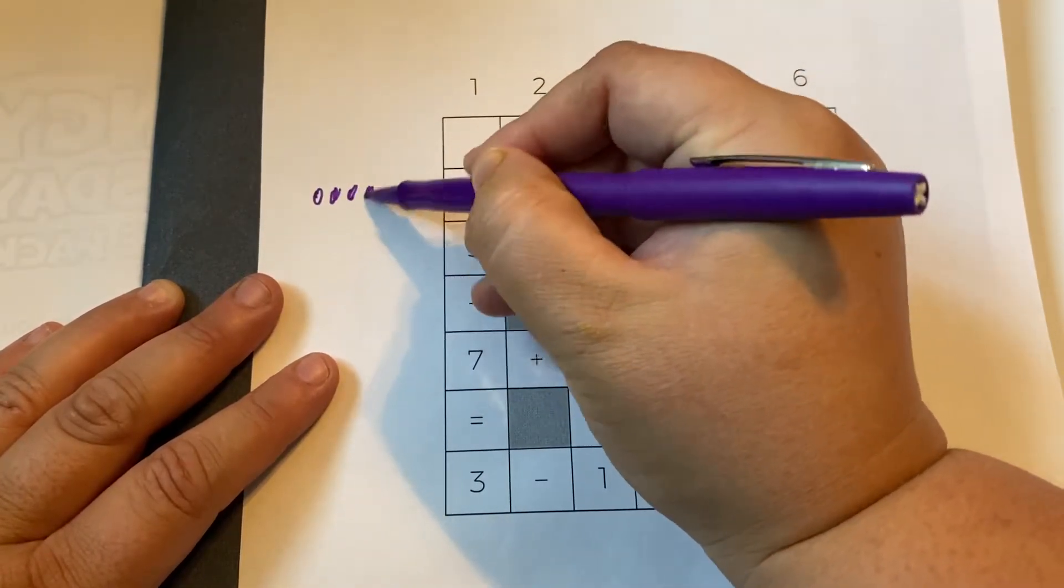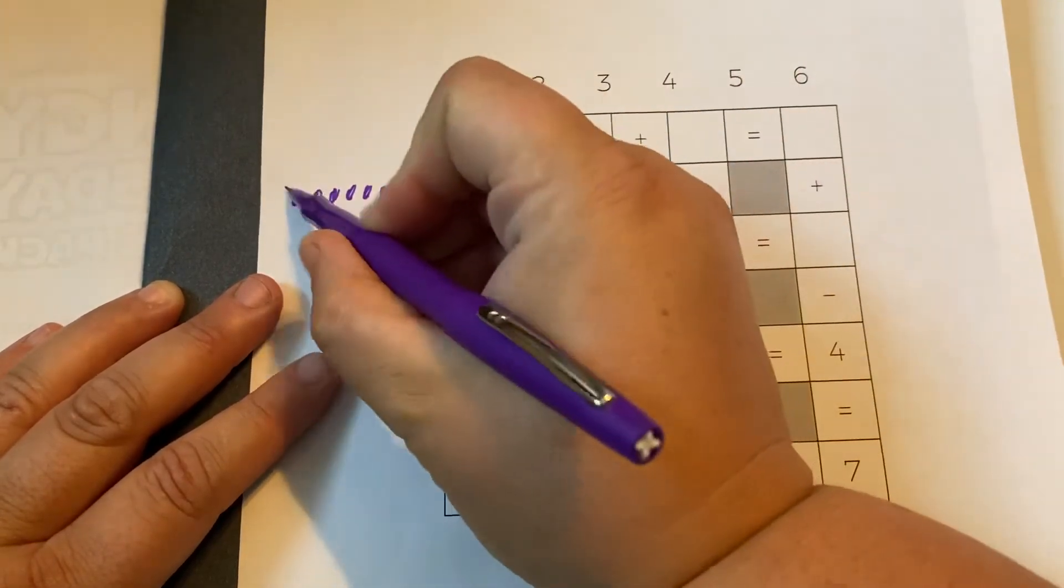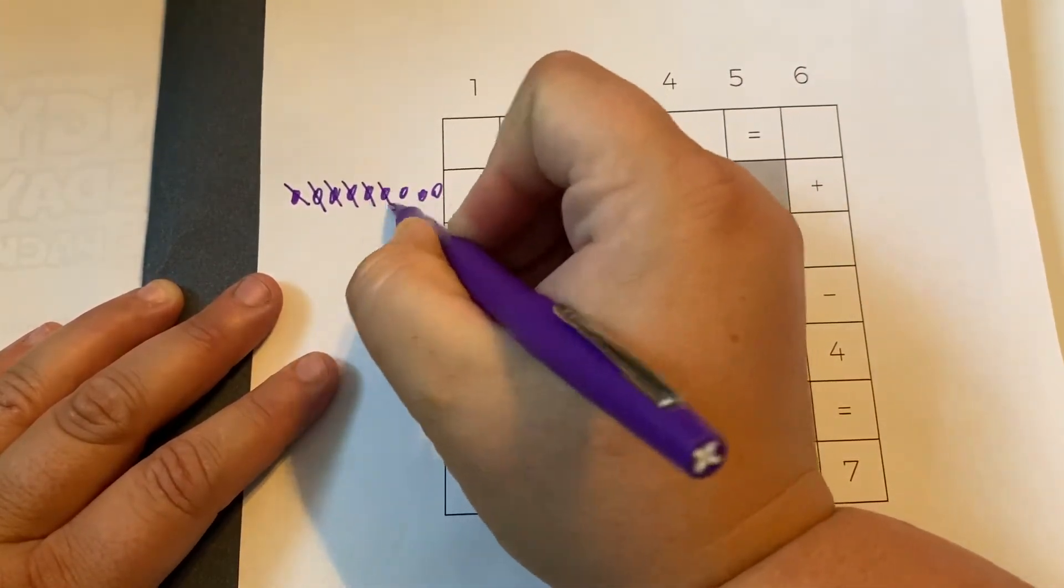One, two, three, four, five, six, seven, eight, nine minus seven. One, two, three, four, five, six, seven.